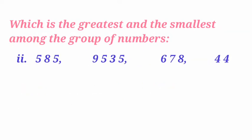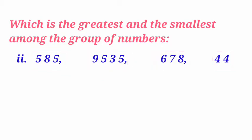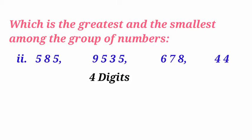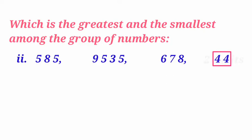Let us see another problem. This problem also has four numbers, and each number has a different number of digits. The first number, 585, has three digits. The second number, 9535, has four digits. The third number, 678, has three digits. And the fourth number, 44, has two digits.